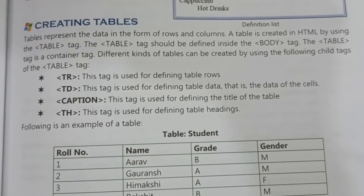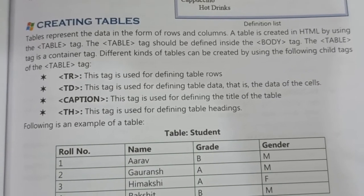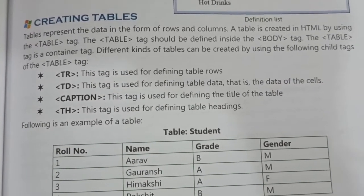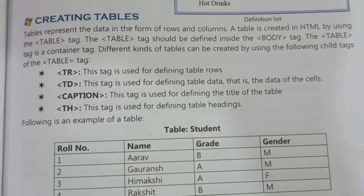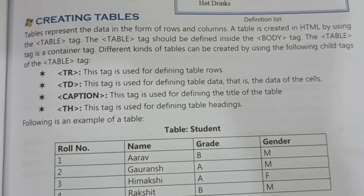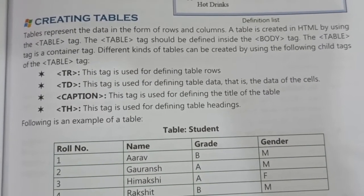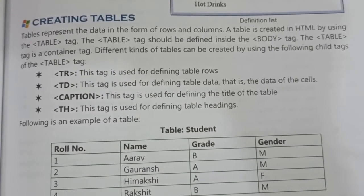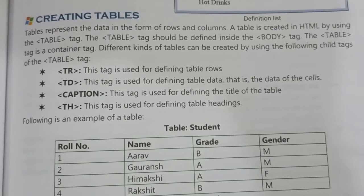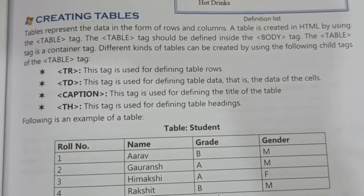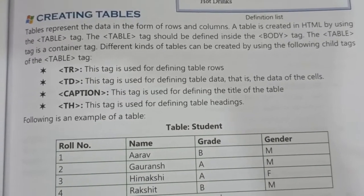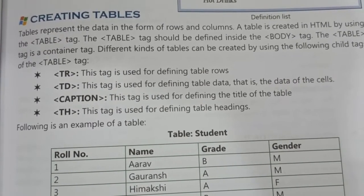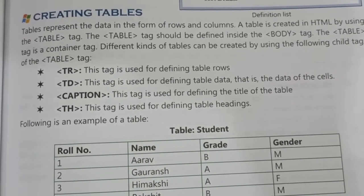The table tag is a container tag, meaning it has an opening and closing tag. Different kinds of tables can be created by using the following child tags of the table tag. The first one is TR — TR stands for Table Row — which is used to create rows.